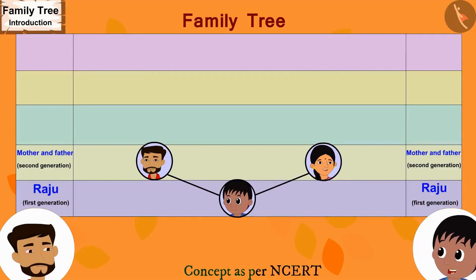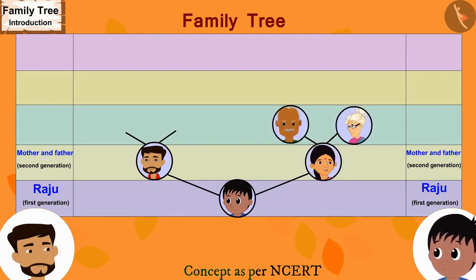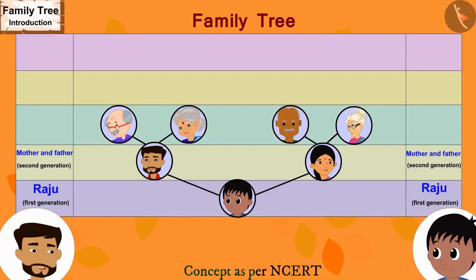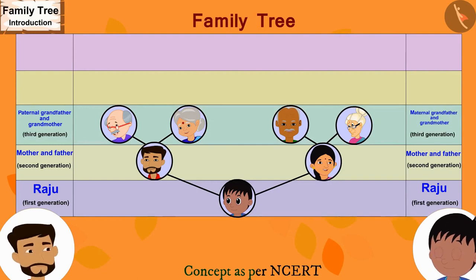Raju, now can you tell me what I need to do to create our third generation? Father, you have to draw two lines each above your and mother's names. You have to write maternal grandfather and grandmother's names on the two lines above mother's name. And on the two lines above your name, you will write paternal grandfather and grandmother's names. That's correct, Raju. Raju's father wrote the names of Raju's paternal and maternal grandparents.